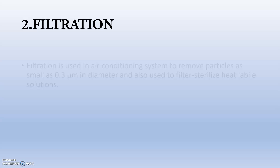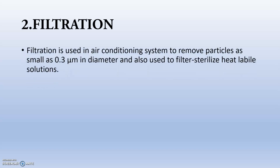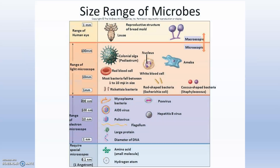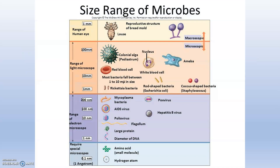Next is filtration. Filtration is used in air conditioning systems to remove particles as small as 0.3 micrometers in diameter, and also used to filter sterilized heat-labile solutions. There is a size range of microbes that various filtration membranes can address, and many filtration options will be available from filtration solution providers.